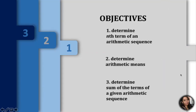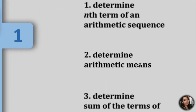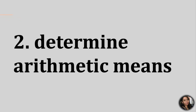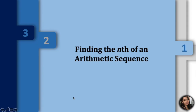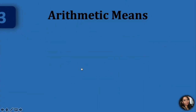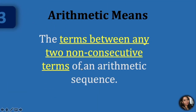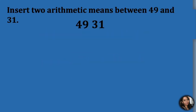Now let's try our second objective, which is to determine arithmetic means. When we speak of arithmetic means, these are the terms between any two non-consecutive terms of an arithmetic sequence — the numbers between any terms. Let's try this problem: insert two arithmetic means between 49 and 31. Therefore, we have to place two blanks in between the numbers.